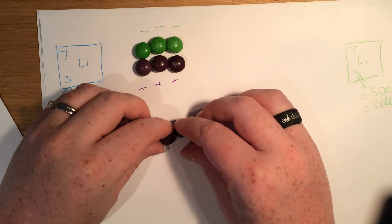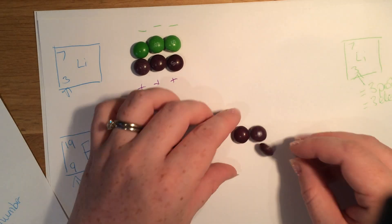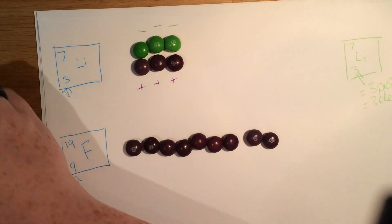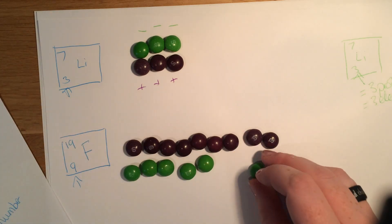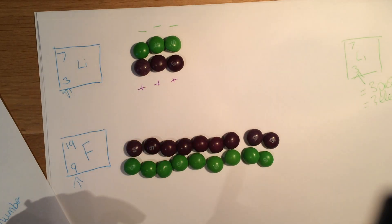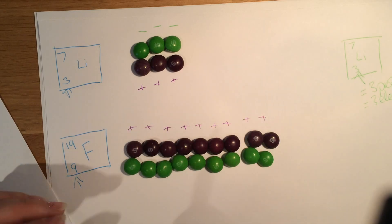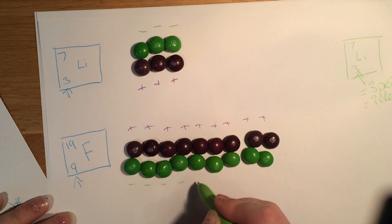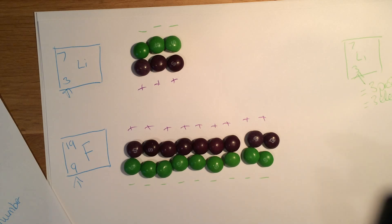Fluorine has nine protons and it also has nine electrons. The positive charges are just going to cancel out the negative charges — nine positive charges and nine negative charges. So in an atom, they are always going to have no overall charge because the positive charges are always going to cancel out the negative charges.